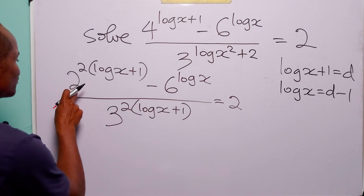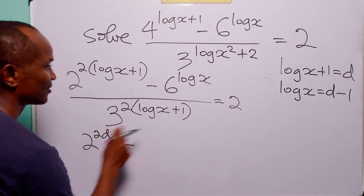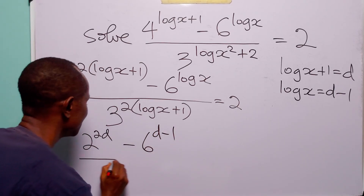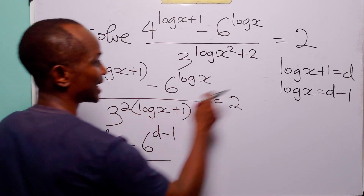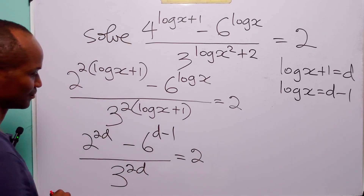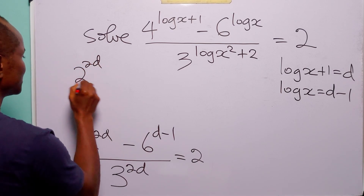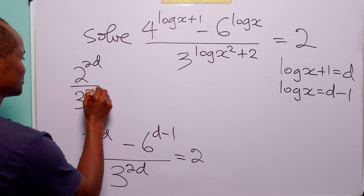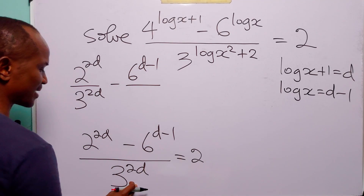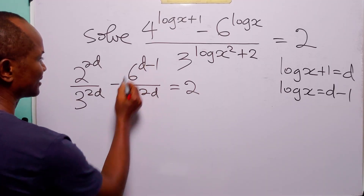We rewrite the equation in terms of d: 2 to the power 2d, minus 6 to the power d minus 1, divided by 3 to the power 2d, equals 2. Let us rewrite this as 6 to the power d minus 1, divided by 3 to the power 2d, equals 2 to the power 2d minus 2.